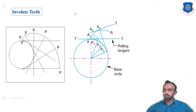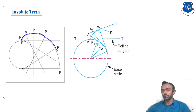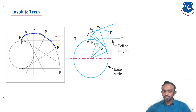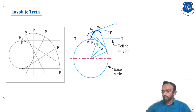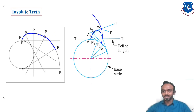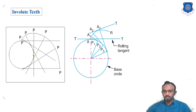For involute teeth: an involute curve is obtained by unwrapping a string wound around a circle — the path traced by the end of the string is the involute. Using this curve on one side of the tooth and mirroring it for the other side, then adding the land at the top, gives the complete involute tooth profile used for gear teeth.